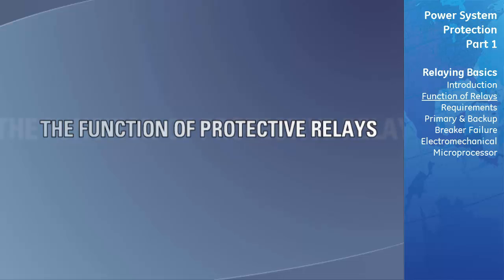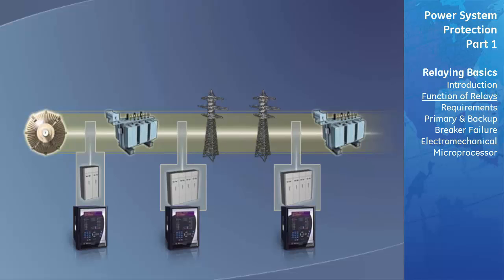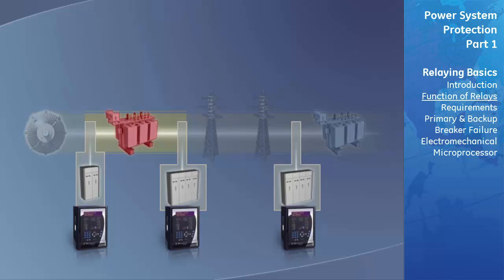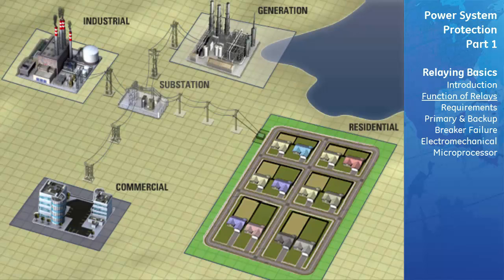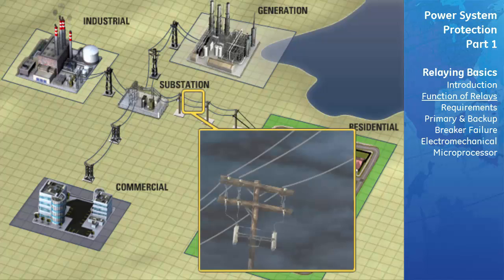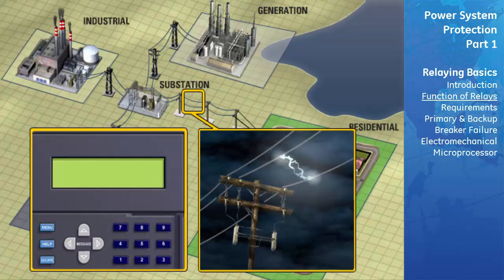The function of protective relaying is to immediately remove any component of a power system when it suffers a fault that might result in damage to property or unsafe conditions. In addition, protective relays can provide information on the locations and types of failures that occur. This information not only helps with equipment repair, but also provides the means for analyzing the effectiveness of the protection scheme.